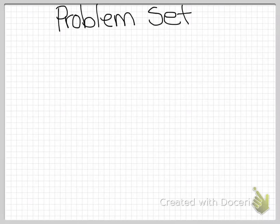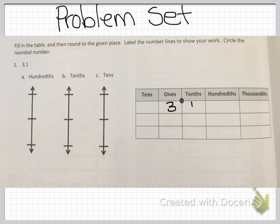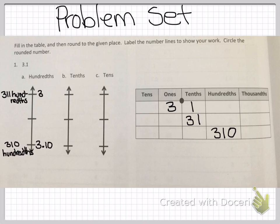Now we're going to be checking your problem set. First problem: fill in the table and then round to the given place. Label the number lines to show your work, and circle the rounded number.